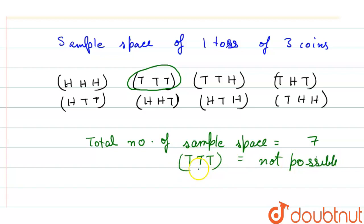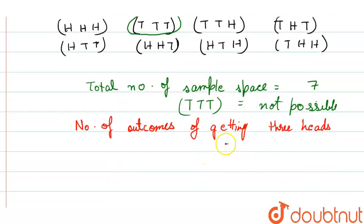So number of outcomes of getting three heads, that is one, right? That is head head and head. So we have only one outcome, so possibility...